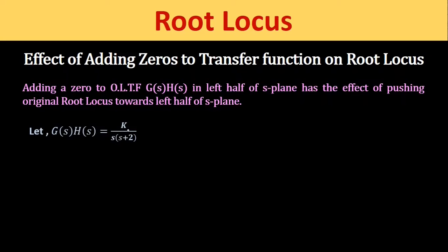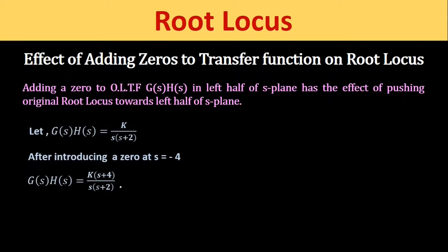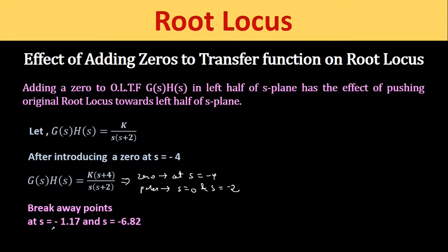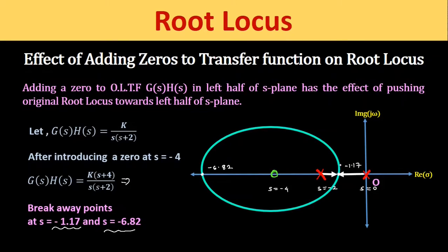First let us take G(S)·H(S) = K / [S(S+2)], which has no zeros. We introduce a zero at S = -4, making the transfer function K(S+4) / [S(S+2)]. This has one zero at S=-4 and two poles at S=0 and S=-2. Finding the breakaway points gives two points: one at S = -1.17 and another at S = -6.82.